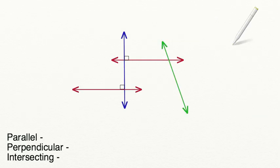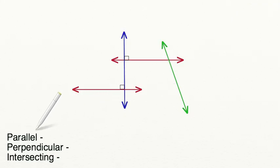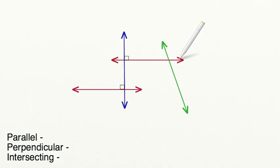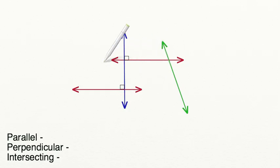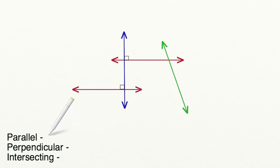Let's use the diagram on the screen to practice what we just learned. Can you tell me which lines are parallel to each other? If we look at this diagram, we can see that these two red lines look like they're parallel to each other. The distance between them is not changing, and they're continually moving on in either direction. So we write down that these red lines are parallel to each other.